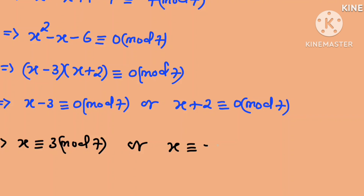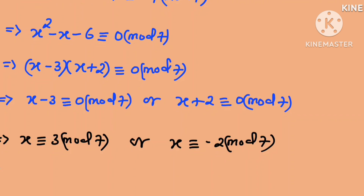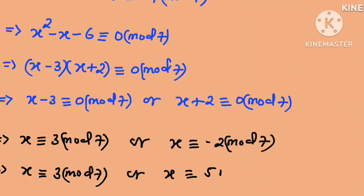So this implies that x is congruent to 3 in mod 7 — by adding 3 to both sides in the first case — or x is congruent to negative 2 in mod 7, by subtracting 2 from both sides in the second case. Adding 7 to negative 2 gives x congruent to 5 in mod 7.